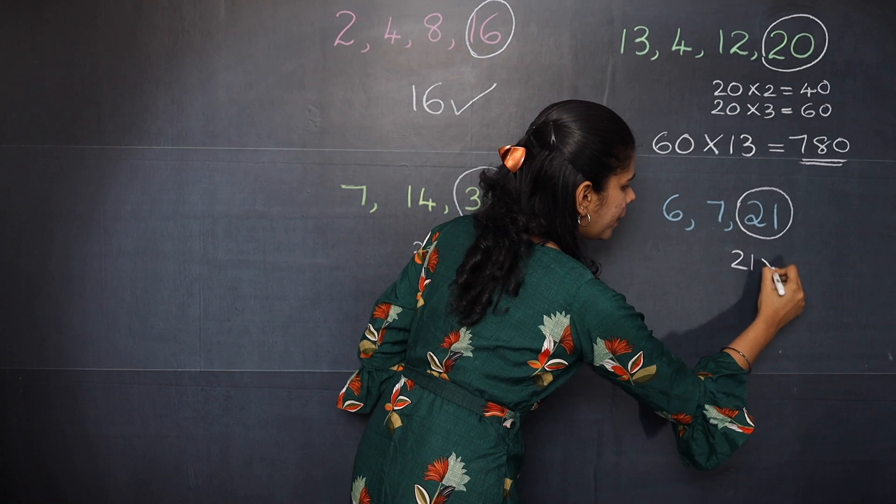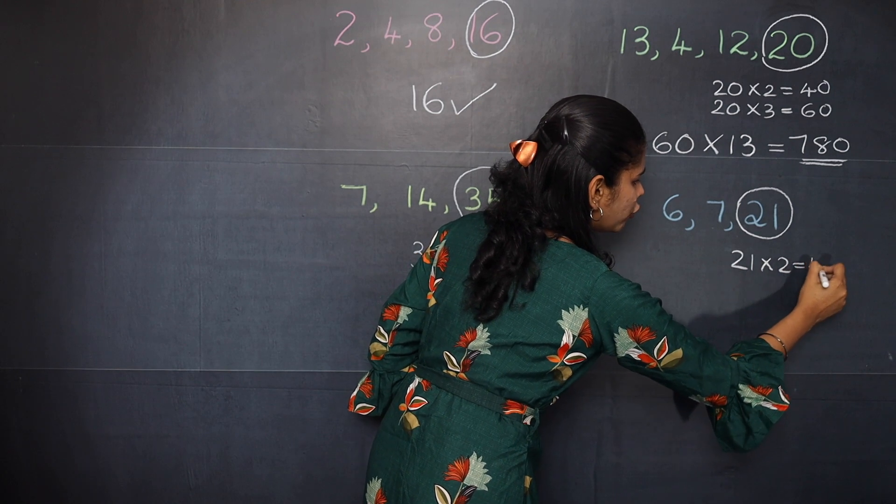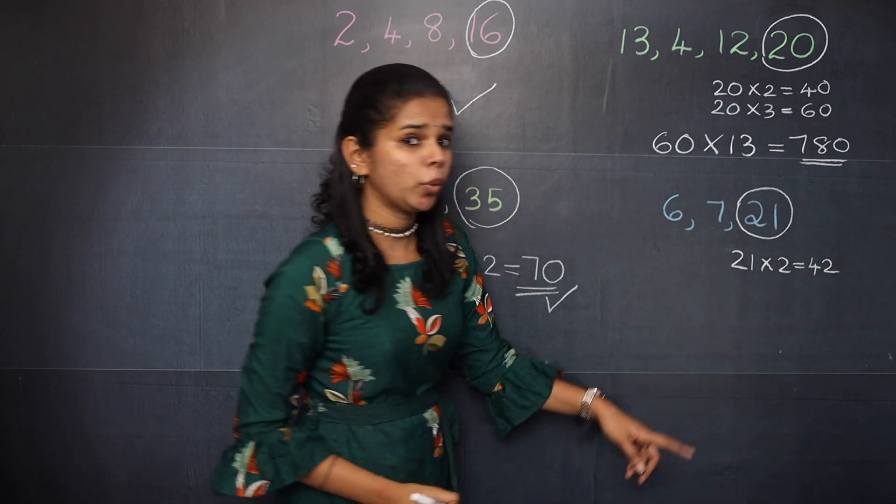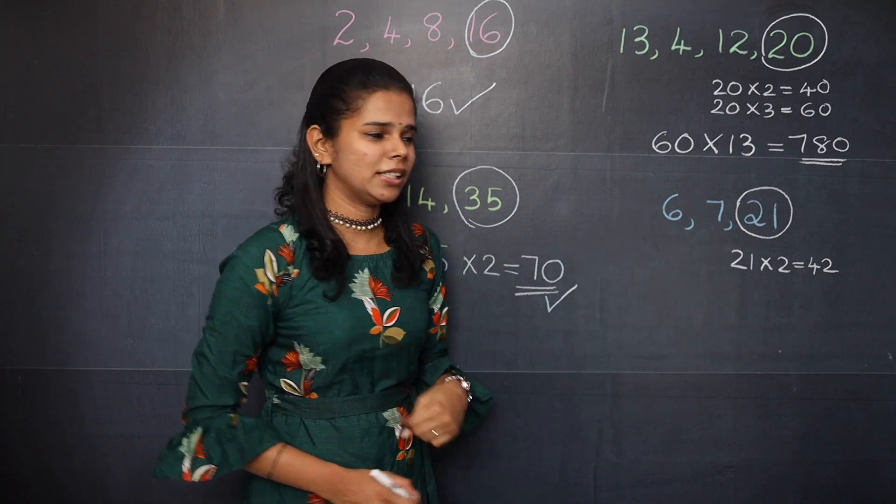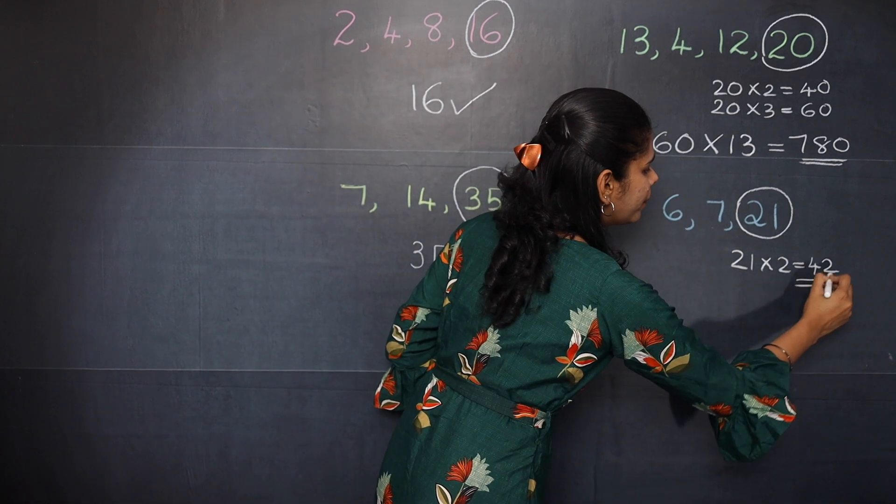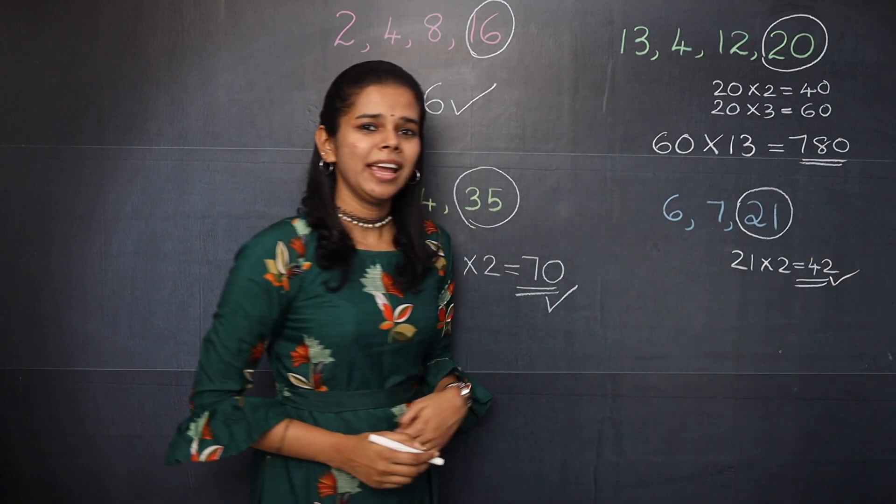You should multiply 21 by 2 and you will get 42. And then you should check whether 42 is divisible by 6 and 7. So you can see it is divisible. So you can confirm that 42 is the LCM.